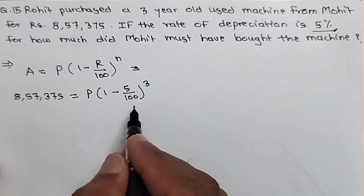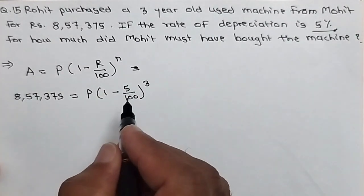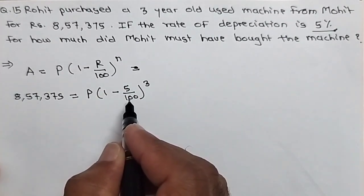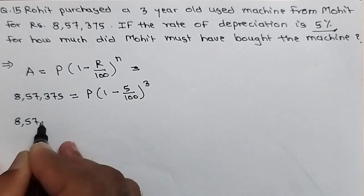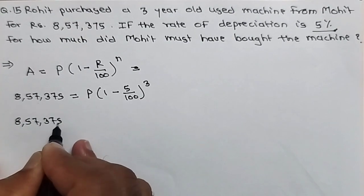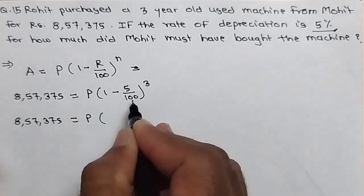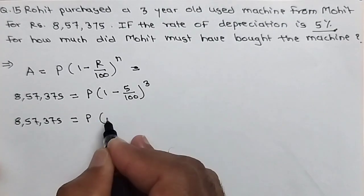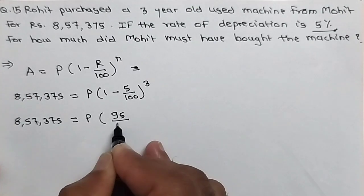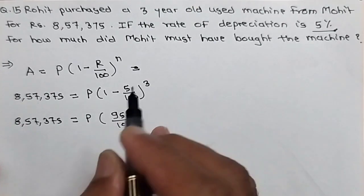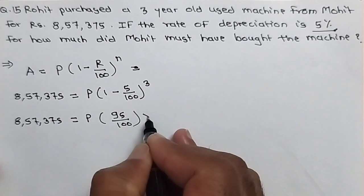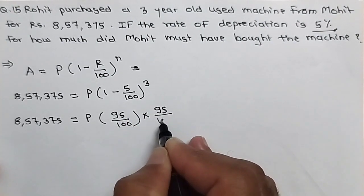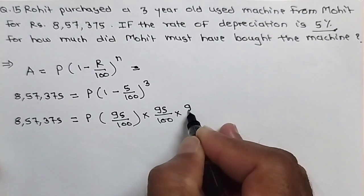Just solve this, it is a calculation part. Now you must use some tricks to make your calculation very easy. I will explain here how. Here, write 857,375 that will equal to P we have to find in the bracket. 100 minus 5 that will become 95 upon 100. Just solve this, you will get 95 upon 100 into 3 means multiply 3 times. 95 upon 100, 95 upon 100.